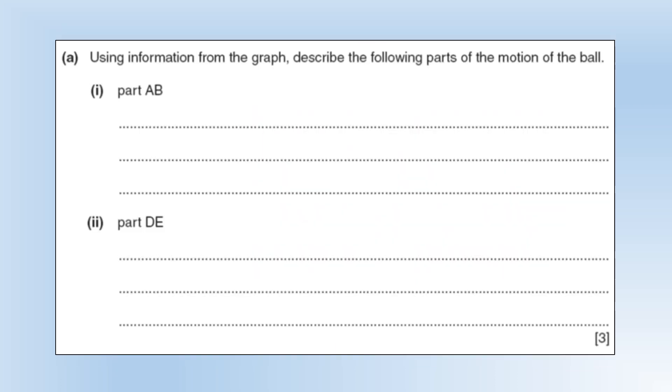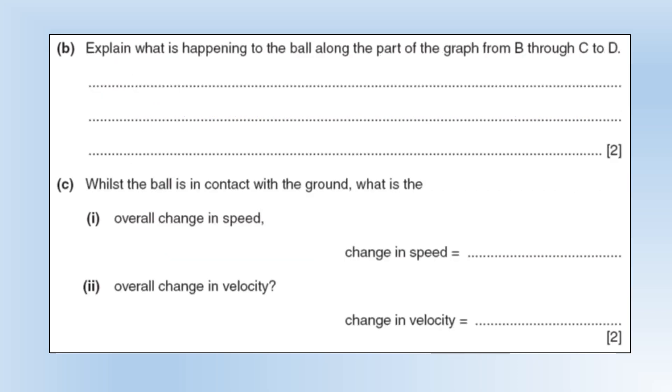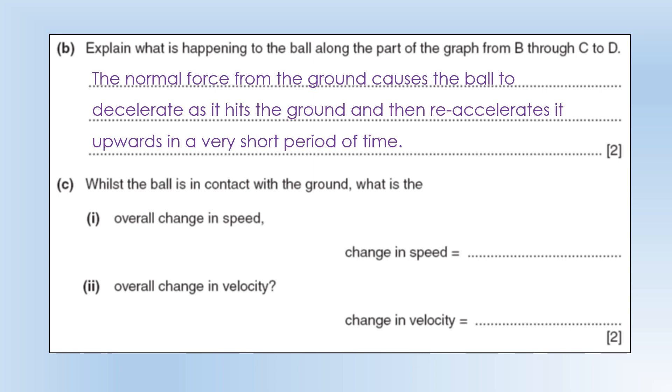Using the information from the graph, describe the motion. A to B is constant acceleration as it free falls towards the ground. From D to E we've got constant deceleration as the ball travels upwards from the ground, slowing down until it comes to a stop. Explain what is happening from B through C to D - this is when the normal force from the ground causes the ball to decelerate. The speed drops to zero and then it re-accelerates as the speed jumps back up again as it goes upwards. That all happens in a very short period of time.